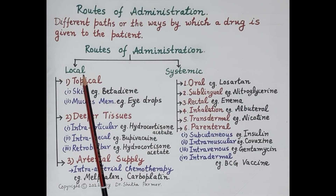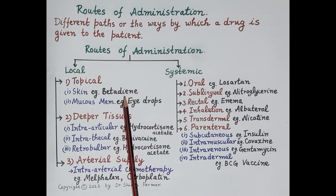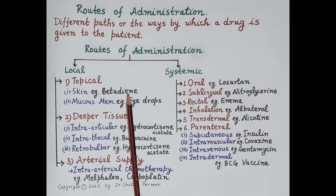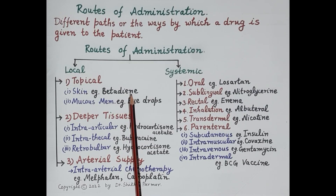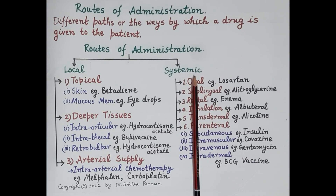Local routes are localized routes — the administration of the drug at a particular location from where the effect is required. For example, Betadine is a very common antiseptic used on skin wounds and minor cuts to prevent infection. It is applied at the site where the action is required, so this administration of Betadine is the local route.